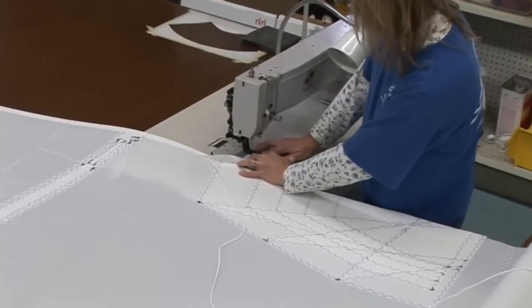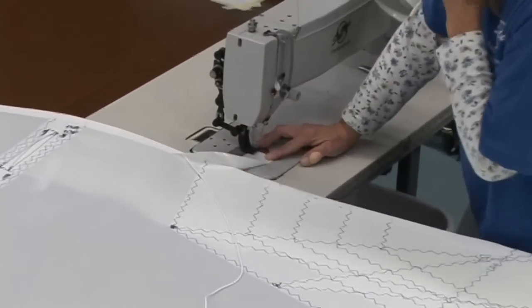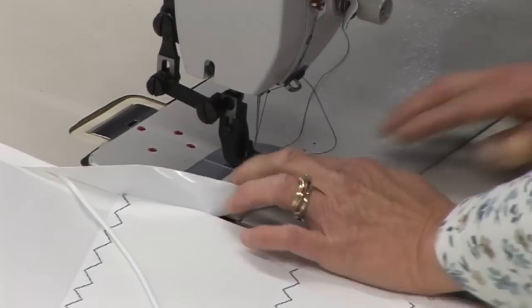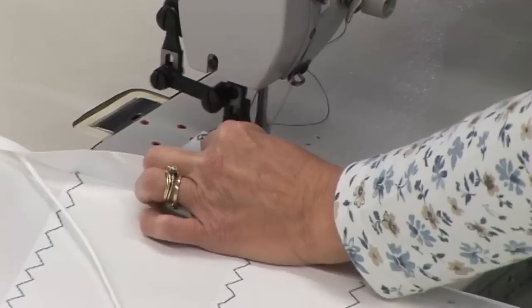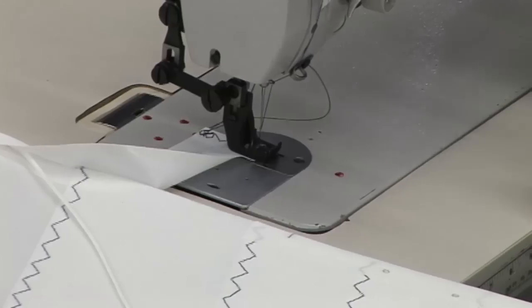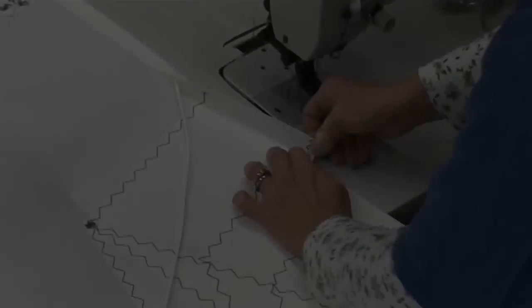Before we continue, we're going to sew that hem. So we're just going to sew the end of this Dacron tape with a stitch just to keep that hem in place. And then we'll continue to baste the remainder of the Dacron tape along the leach.